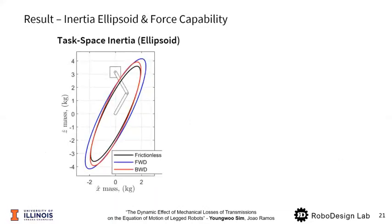And here's the result. First, task space inertia. Take a look at the black line, which is of frictionless system. Blue is for the forward driving case, and red is for the backward driving case. Both ellipsoids of forward and backward driving cases are larger than that of the frictionless case. It makes sense because friction is dissipating energy, so you need to inject more energy into the system, and that's why it feels heavier.